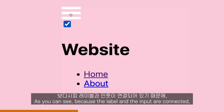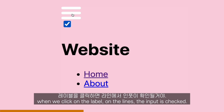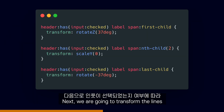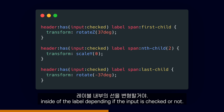As you can see, because the label and the input are connected, when we click on the label on the lines, the input is checked. Now we are going to hide the input from the user. Next, we are going to transform the lines inside of the label depending on whether the input is checked or not.